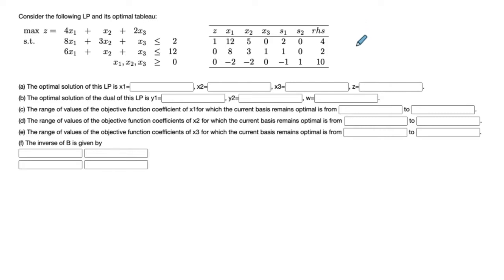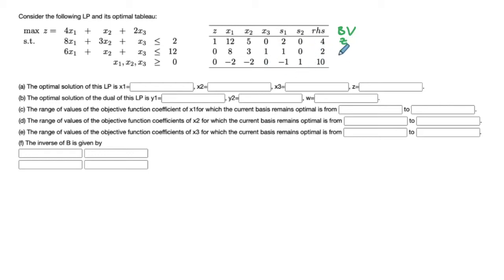The first thing we do is look at which variables are basic and which variables are non-basic in this optimal tableau. Creating an additional column for basic variables, it is clear that the basic variables are x3 in row 1 and s2 in row 2.